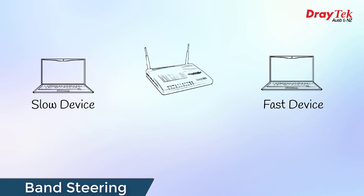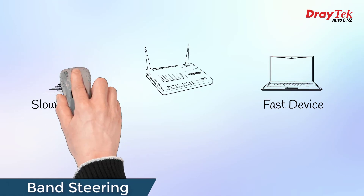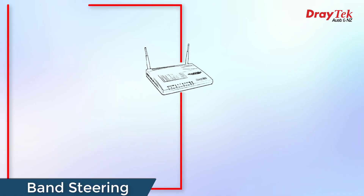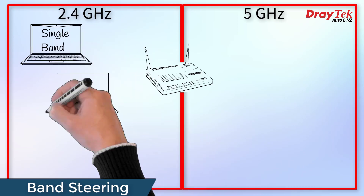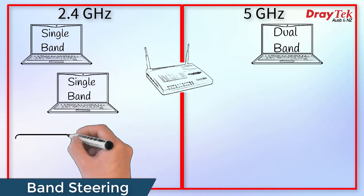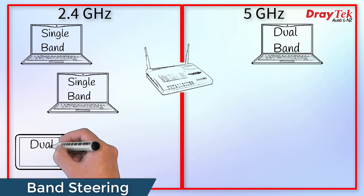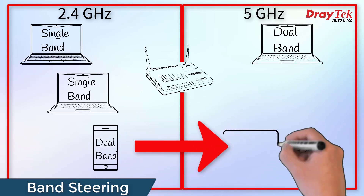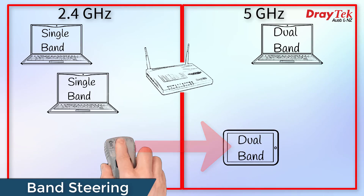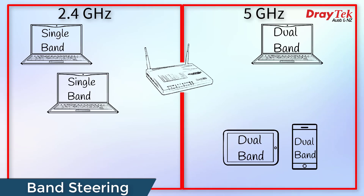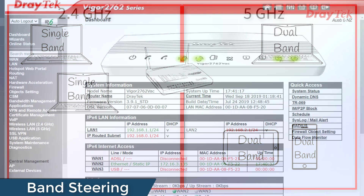Band steering also helps speed up a wireless network by reducing congestion on Wi-Fi bands. Let's assume we have a mixed network with some single band and some dual band capable devices. Band steering will automatically steer the 5GHz capable devices to the 5GHz band, freeing up the 2.4GHz band for those devices that can only do 2.4GHz.